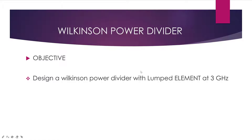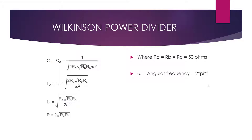The objective of this tutorial is to design a Wilkinson power divider with lumped elements at a frequency of 3 GHz. Before we create the lumped element model, we need to calculate the capacitance and inductance values of the device. These values can be calculated using the formulas shown. For capacitor 1 and capacitor 2, we use this formula. For inductor 2 and inductor 3, we use this formula. For inductor 1, we use this formula. And for the resistor, we use this formula.